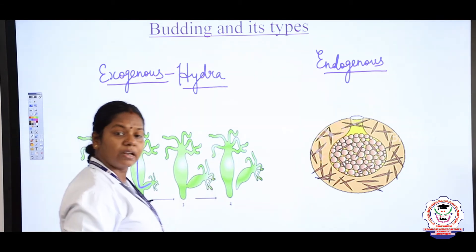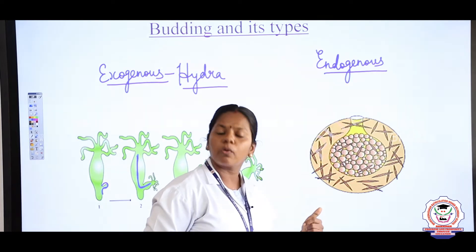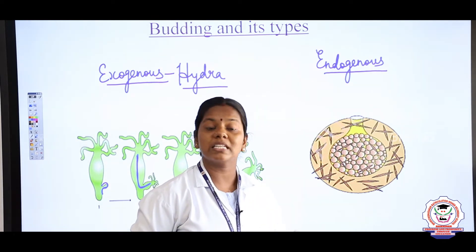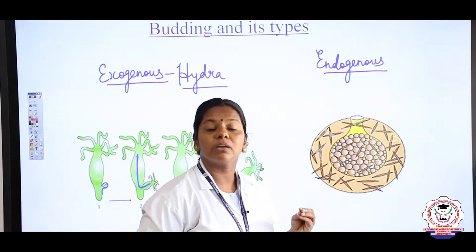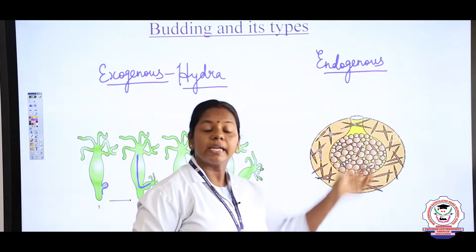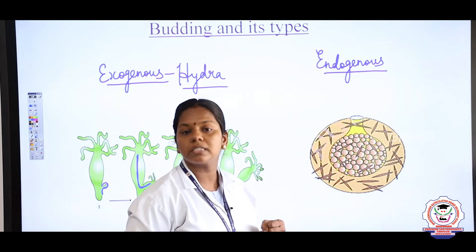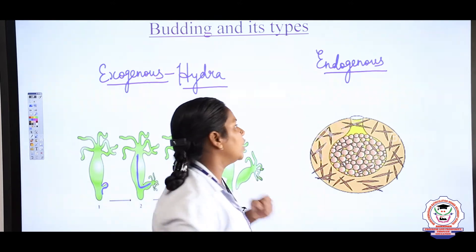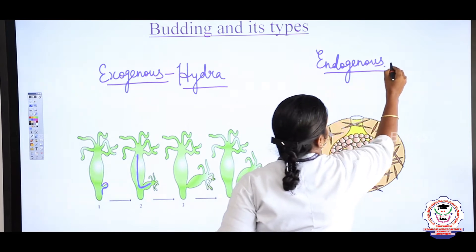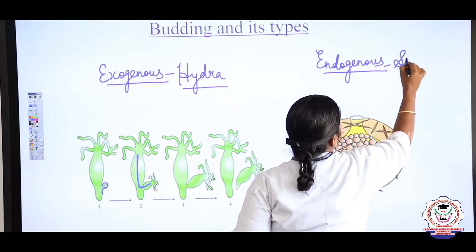Now we are going to study endogenous budding. Endo means inside — if the buds are formed on the inner side of an organism, it is said to be endogenous. The best example for endogenous budding is sponges.